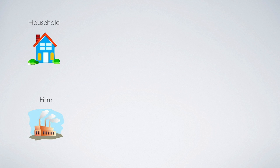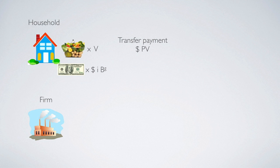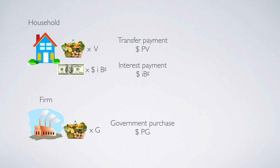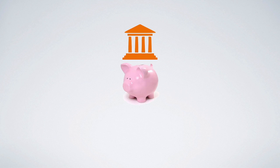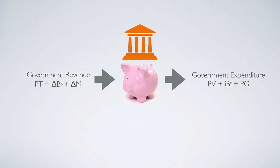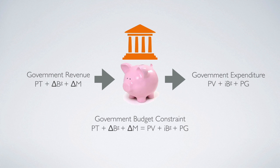So all three expenditure components together: the transfer of purchasing power V is called transfer payment, so P times V is the monetary transfer payment back to the household; the I times B^G part is called interest payment to the public; and the first purchasing part is called government purchase, with government purchase amount equal to P times G dollars. All three components summed together define government expenditure. The equality of revenue and expenditure defines the government budget constraint.